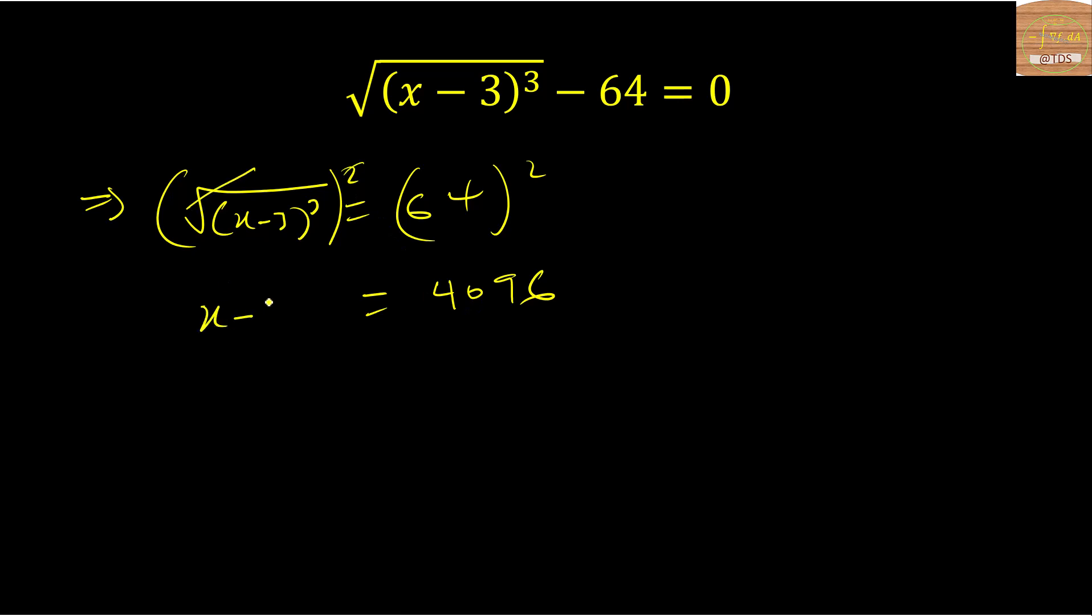We have this. Okay, so let's remove this cube here by taking cube root of both sides. So this one will cancel, and I will have x minus 3. Cube root of 4096 gives us 16.